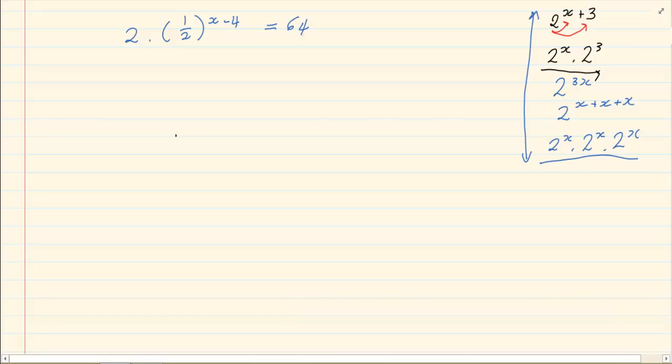Now we first have to always get the unknown alone. In this case because it is linked to the half and the 4 is a power the entire thing is working together. The only part we can get rid of is the 2. So we divide both sides by 2 giving us half to the power of x minus 4 is equal to 32. So first you get the unknown alone which is a general rule for solving for x.